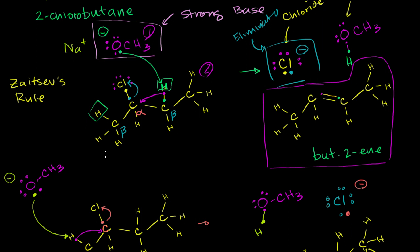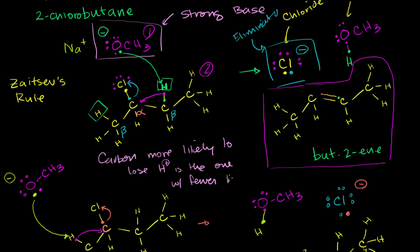So looking at this reaction, we have our alpha carbon. Either this beta carbon or this beta carbon could lose its hydrogen. This one has three hydrogens on it; this one only has two. So Zaitsev's rule tells us that this beta carbon — the one with two hydrogens — is the one more likely to be reacted with the base. You could almost view it as being the more acidic proton — it is lower-hanging fruit for this strong base to capture. If both beta carbons have the same number of hydrogens, you'd see equal products.